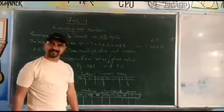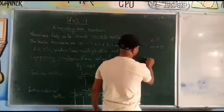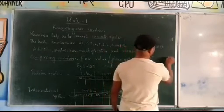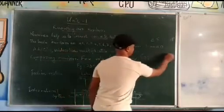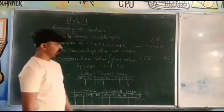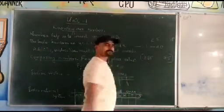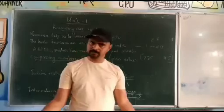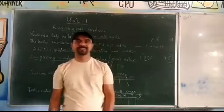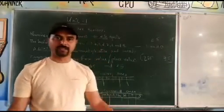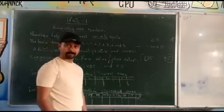Two numbers are given here: 735 and 735. What is the face value of 7? The face value of 7 is 7 only — nothing else. In both numbers, the face value of 7 is 7. That is face value — it stays the same. Now place value: at what place is the digit located?